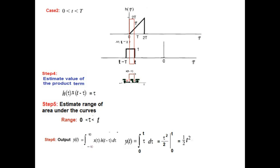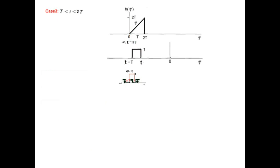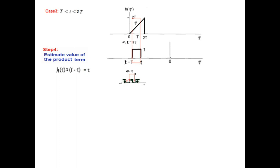Now let us pull it further. Case 3: t is between capital T and 2 capital T. There is complete overlap of the bottom signal. The slope is still tau and the amplitude is 1, so the multiplication gives tau times 1, which is tau.